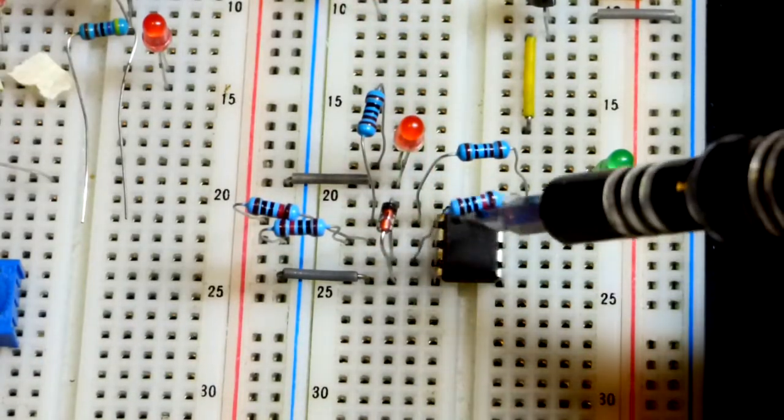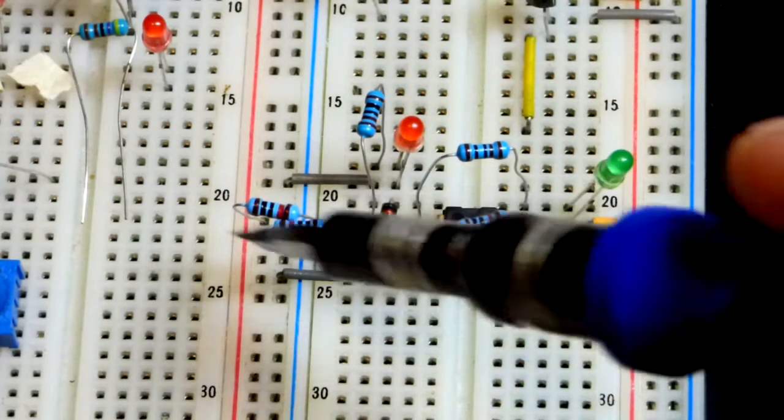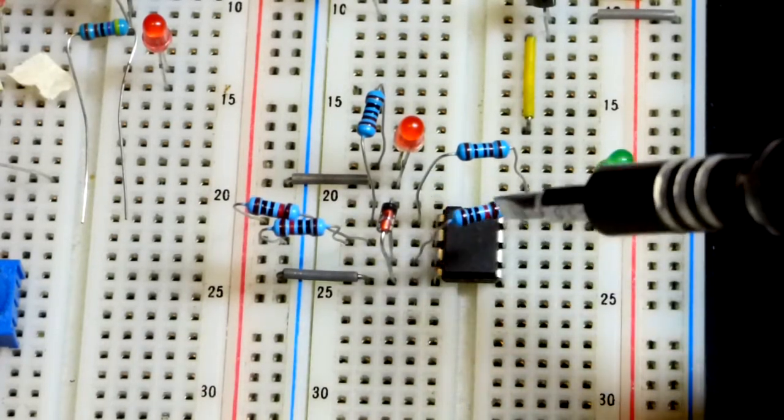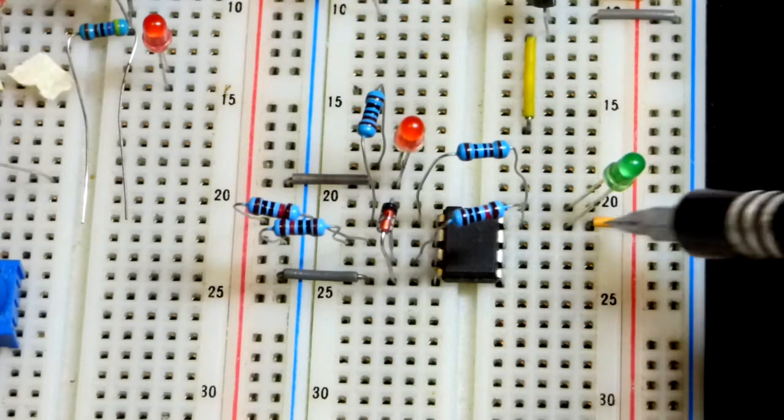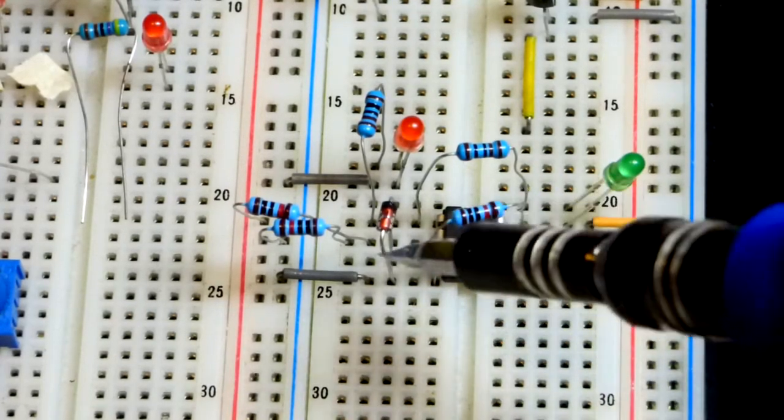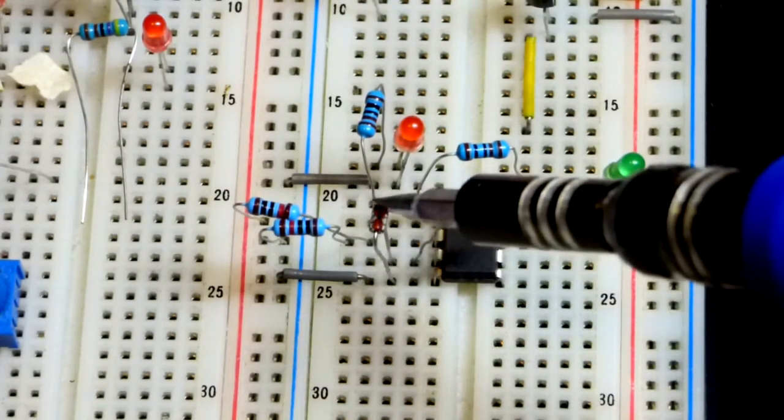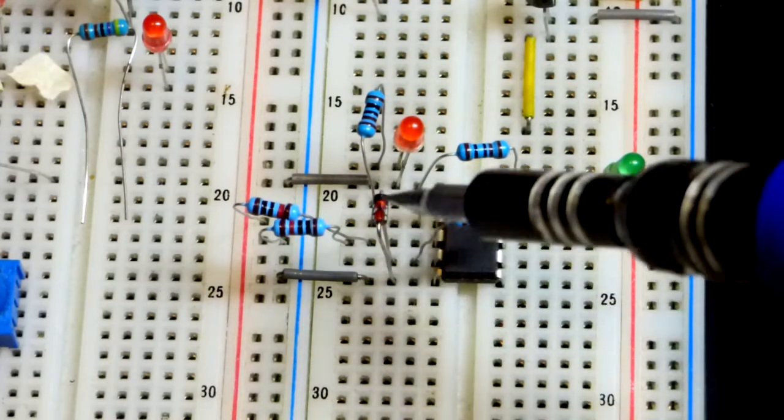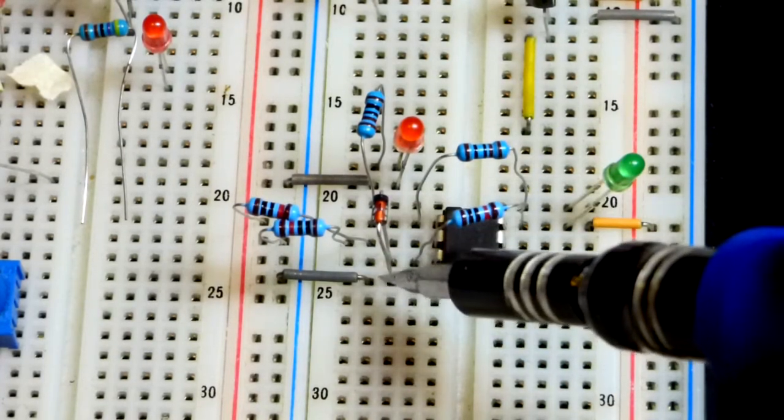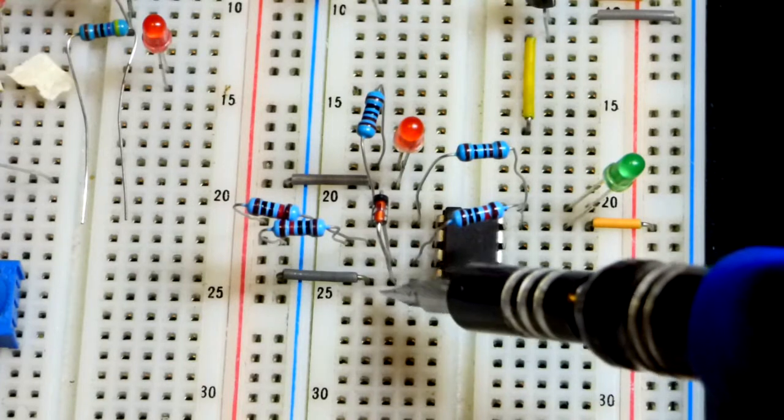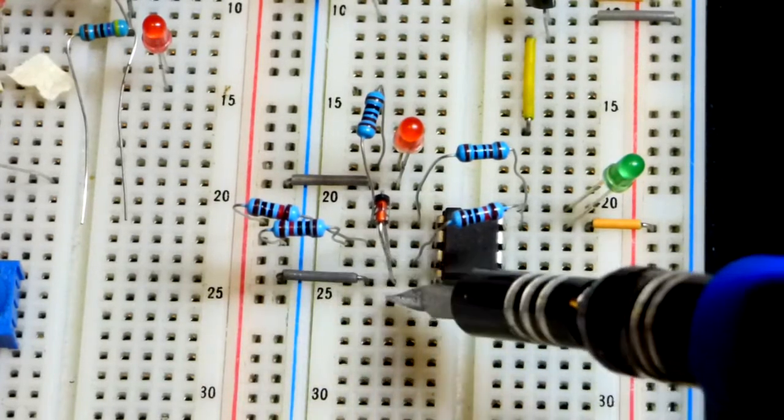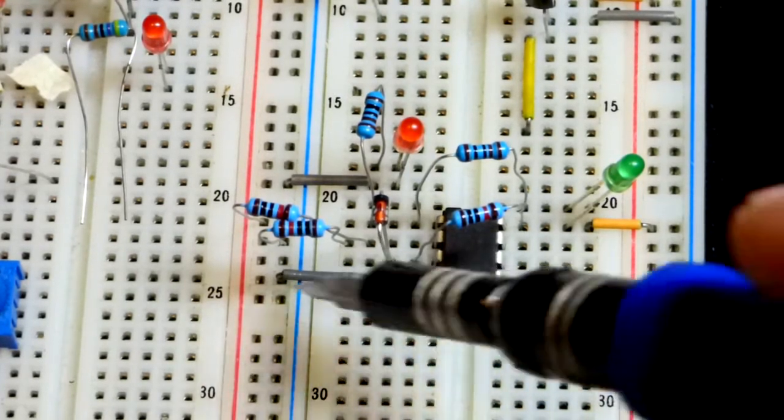We have our zener diode here. Instead of crowding this area even more, we got a 10 kilohm resistor right there to where that jumper goes with the positive supply. It's going to the cathode, there's a black stripe up there. It's a 5.1 volt zener diode. That's going to the negative supply.